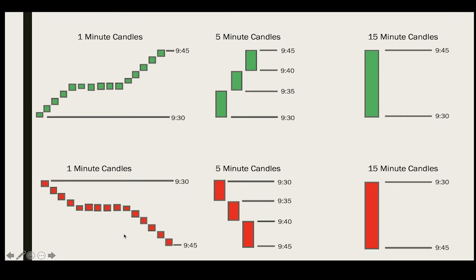Let's get an idea of how candlesticks actually form. We have one 15-minute candle, and let's assume it started forming as soon as the stock market opened at 9:30 AM Eastern time. Looking at the 15-minute chart, it opened at 9:30 at this price and closed at 9:45. If we go to the lower time frame — the five-minute chart — we have three five-minute candles forming as that 15-minute candle is forming.